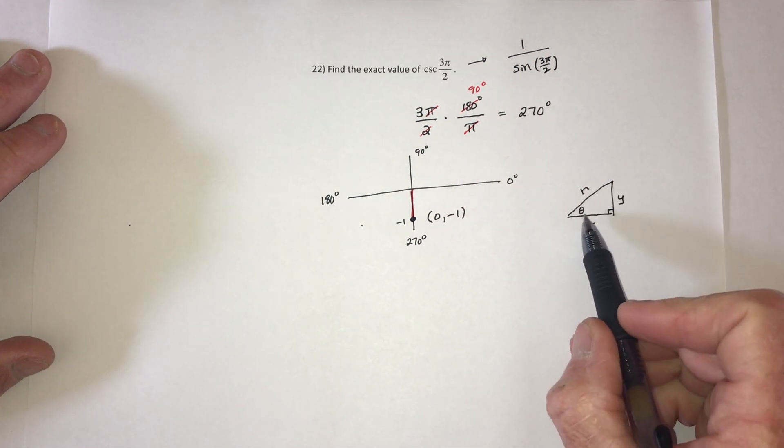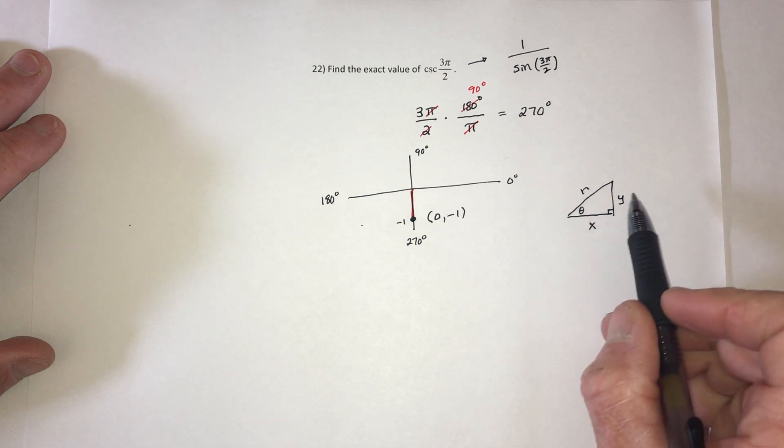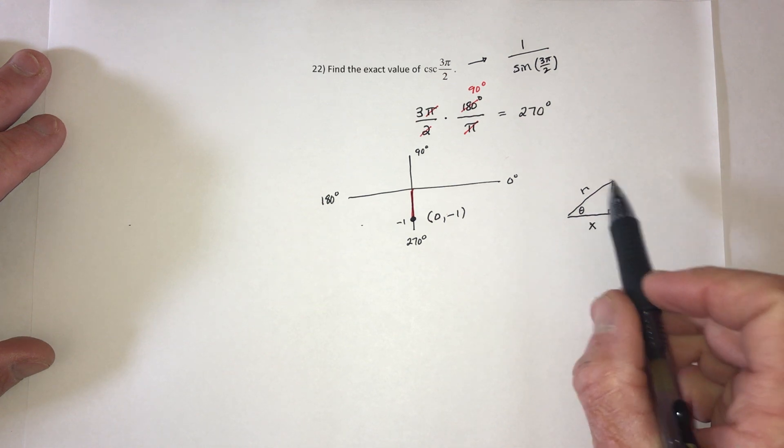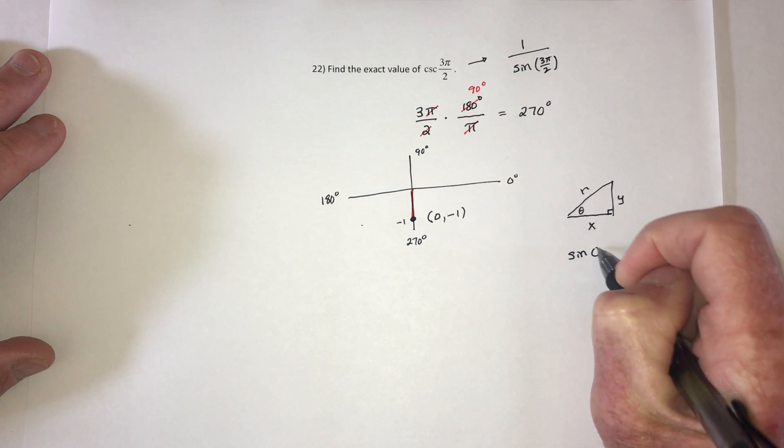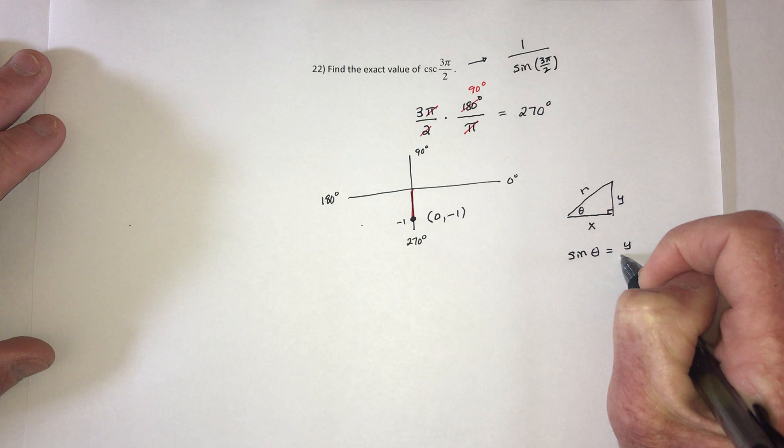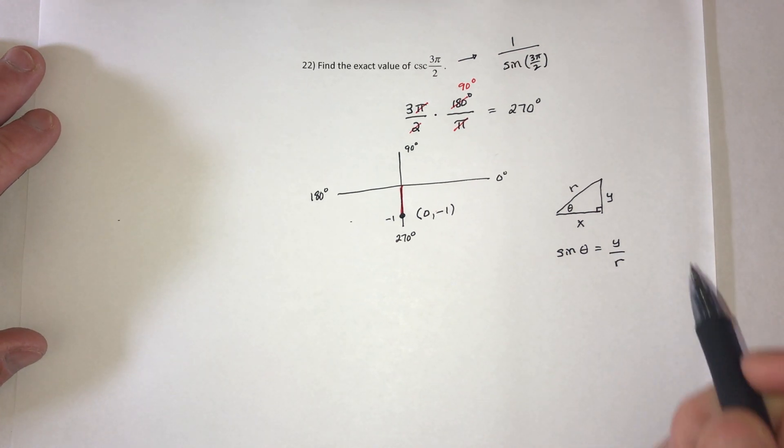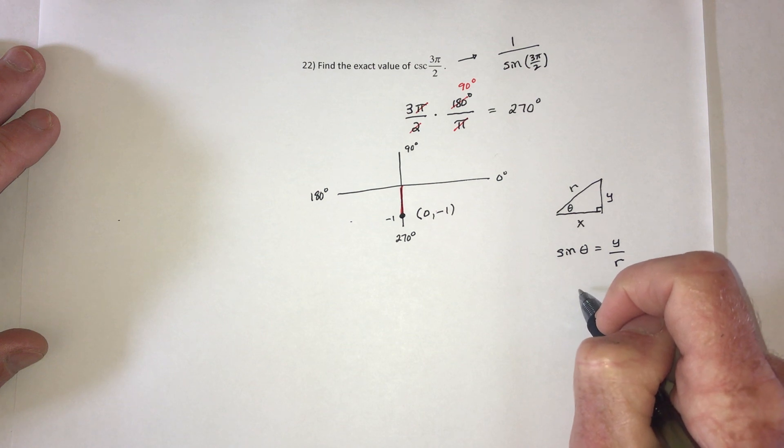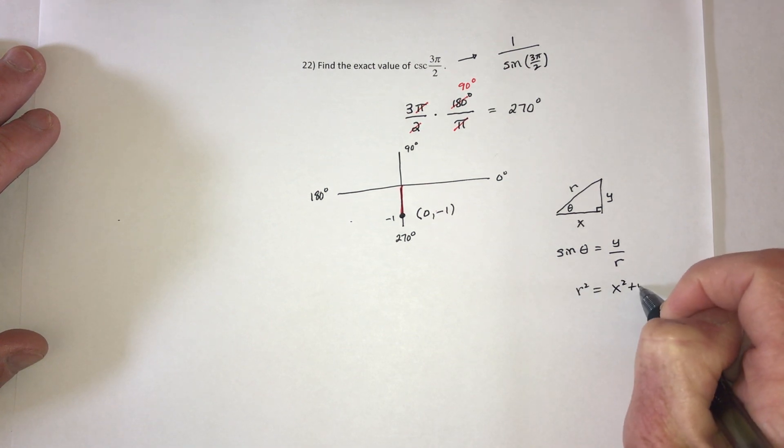So what does sine equal? Sine of θ is equal to the opposite over the hypotenuse, or in other words sine is equal to y over r. And also I could use the Pythagorean theorem that r² equals x² plus y².